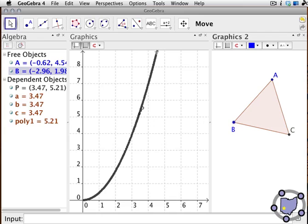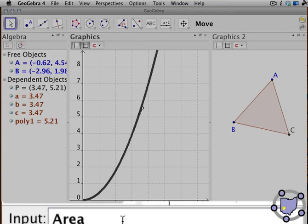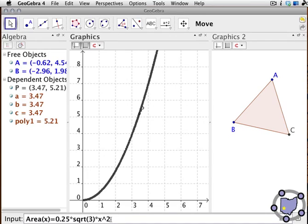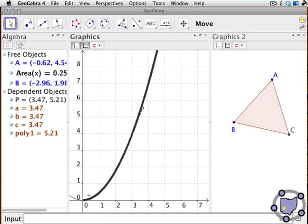You could ask your students at this point what kind of curve they believe this to be. And then we're going to click in the Graphics 1 window and type in an equation that might fit that curve. So I'm going to type in area(x) equals 0.25 times the square root of 3 times x squared. Notice the syntax I'm using. And when I hit return, notice that that curve fits those plotted points.